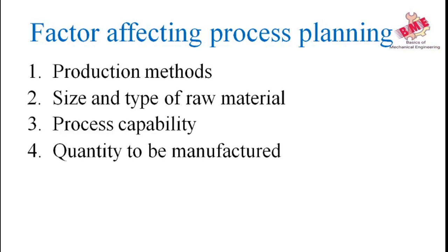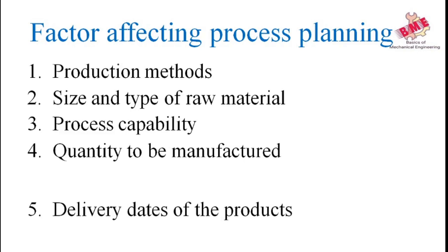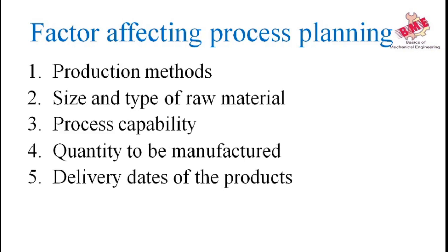The fourth factor is quantity to be manufactured — the higher the quantity, the more defined and economical the process needs to be. Mass production generally demands special purpose machines, while medium or low job production requires general purpose machines like drilling machines and lathe machines. The fifth factor is delivery dates — a longer delivery date allows sufficient time for the process engineer to plan every aspect of the process in detail. For shorter delivery periods, production must be planned accordingly, parts may be ordered from outside, and overtime can be given to labor.